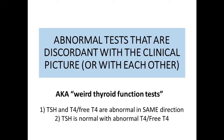Question about weight loss clinics running a whole panel of thyroid tests and putting patients on Armour thyroid. The point about weight loss clinics checking a whole panel to find something abnormal — you will find it. If you check thyroid antibodies, the entire panel, and a thyroid ultrasound, half of women over 50 have thyroid nodules. A good way to make a patient think you're a great doctor is to check a bunch of things, because you'll find something abnormal.